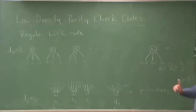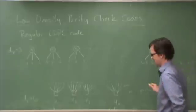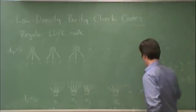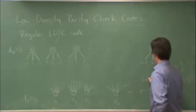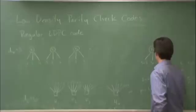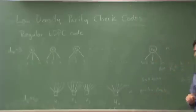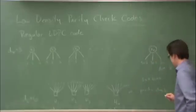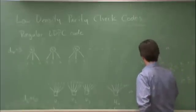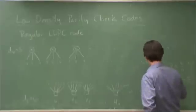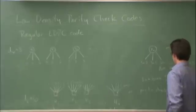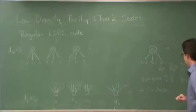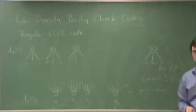Now, one thing to notice here is that the number of edges on the top and the bottom has to be the same. So 3N has to equal 6M. What that implies in this example is that M over N has to equal 3 over 6, which is one half. In other words, there's half as many parity checks as variables.